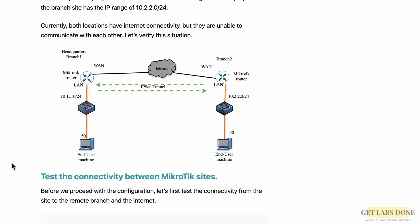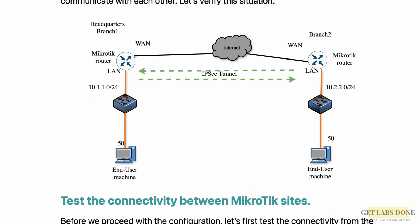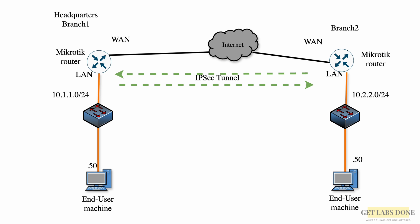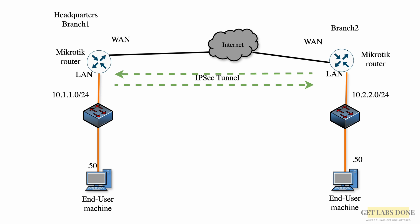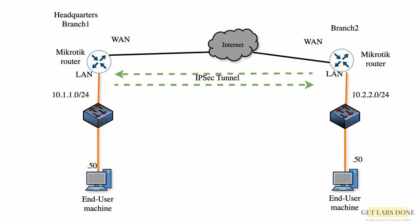As you can see, I have this setup where I have a MikroTik site which I call HQ. For the sake of this video I will call it branch 1, which has a subnet of 10.1.1.0/24, and another site, branch 2, that has a network of 10.2.2.0/24.